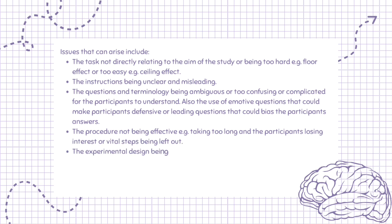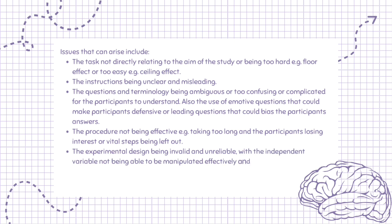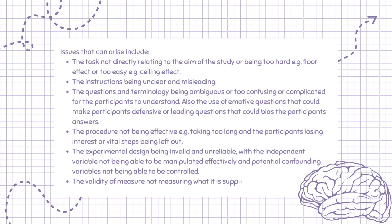The experimental design may be invalid and unreliable, with the independent variable not being able to be manipulated effectively and potential confounding variables not being able to be controlled. Additionally, the validity of the measure may not be measuring what it is supposed to measure.